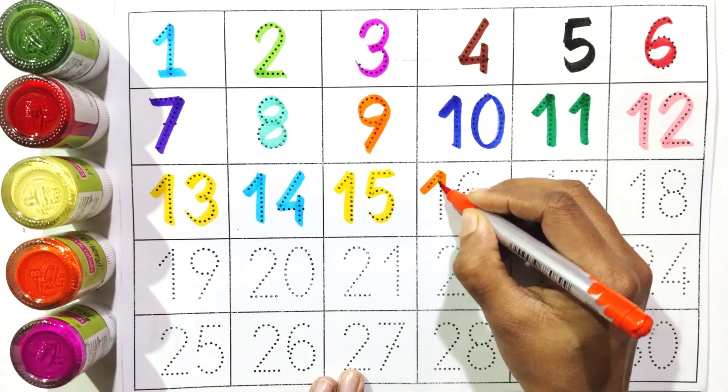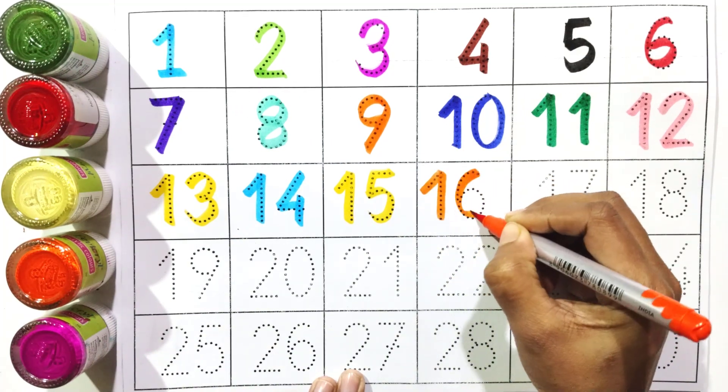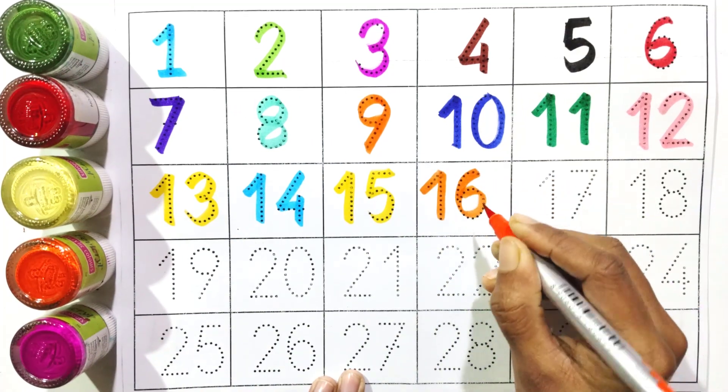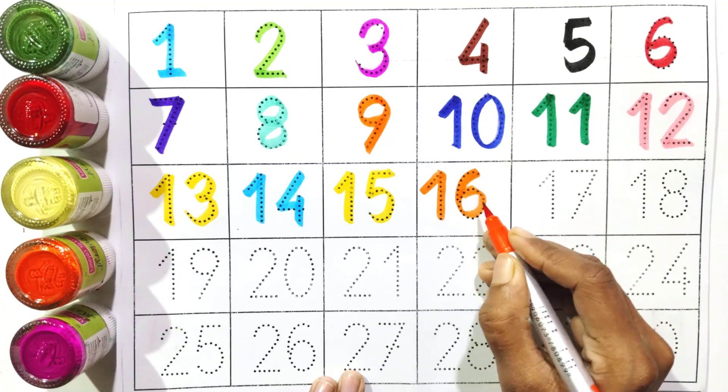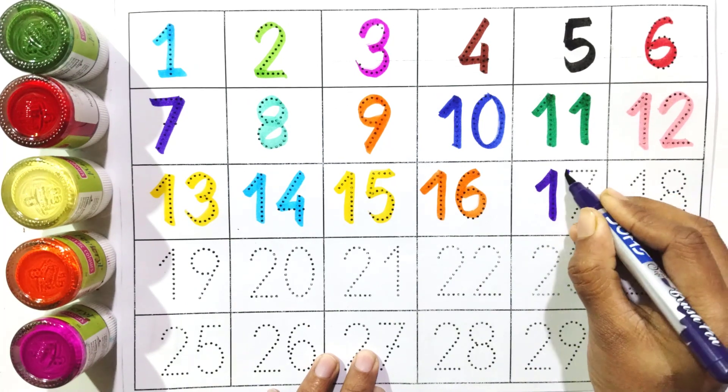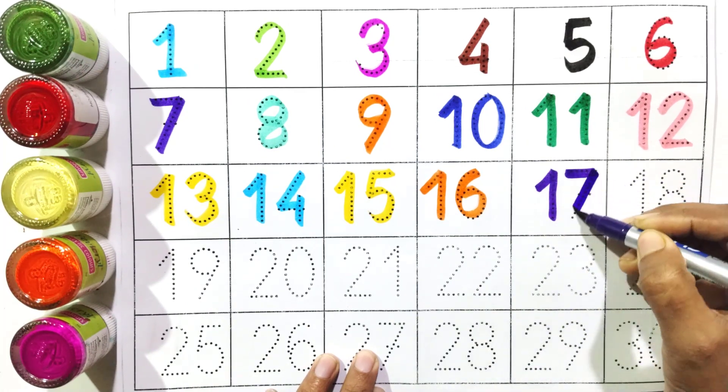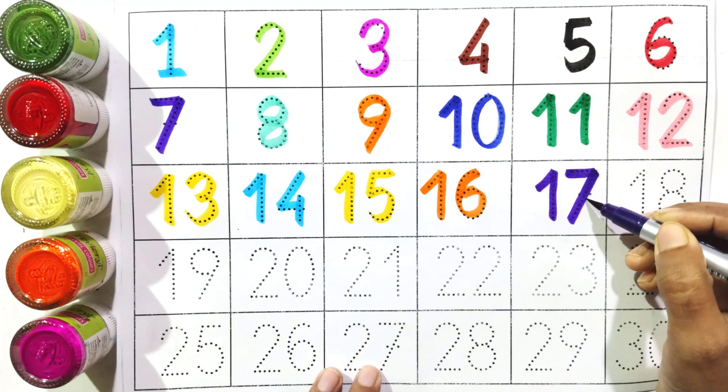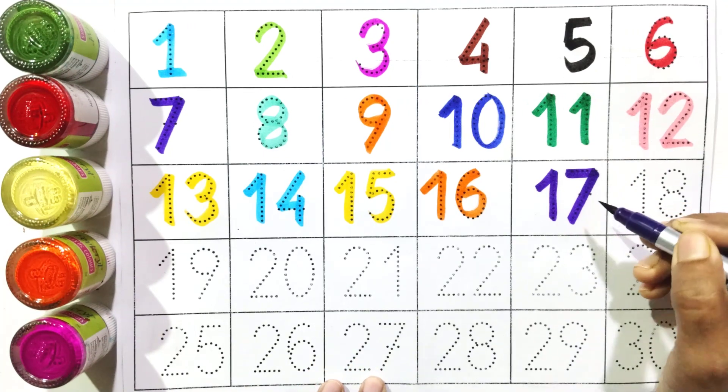One and six: sixteen. Say with me: sixteen. One and seven: seventeen. Say with me: seventeen.